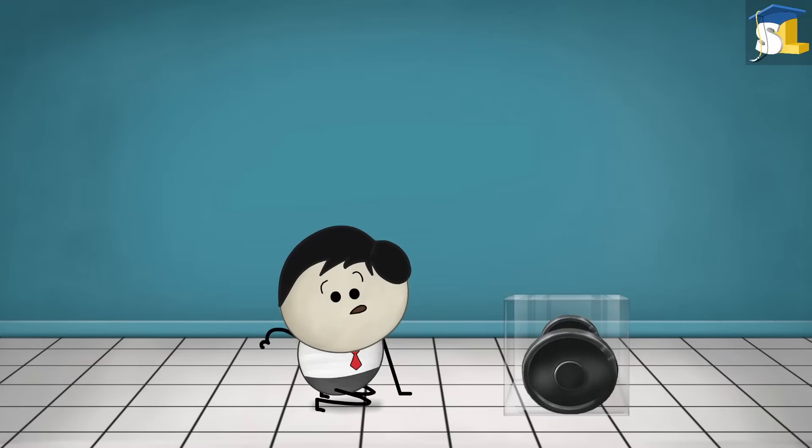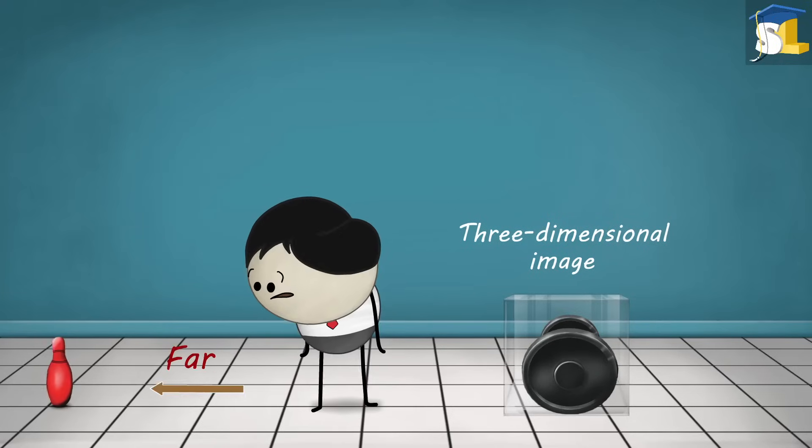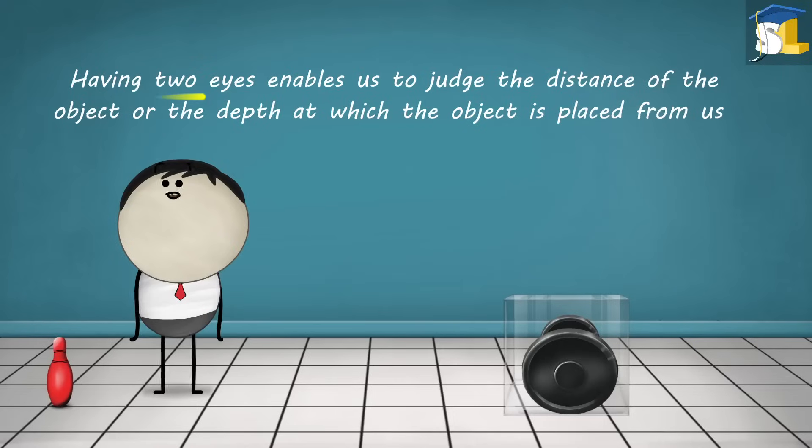But what is the use of a three-dimensional image? A three-dimensional image helps us to understand how far or how near an object is from us, facilitating better depth or distance perception. This means having two eyes enables us to judge the distance of the object or the depth at which the object is placed from us.